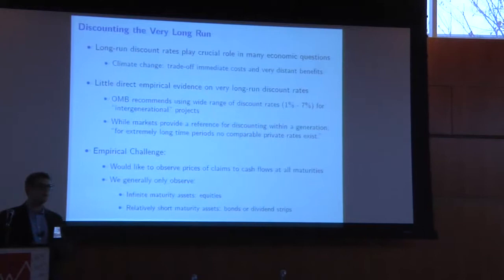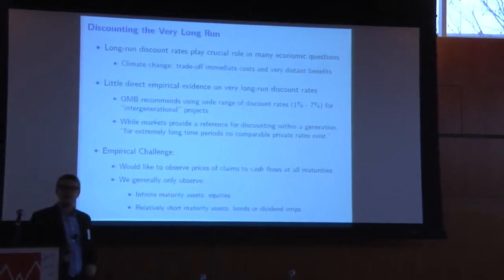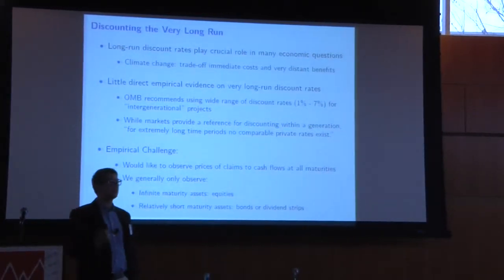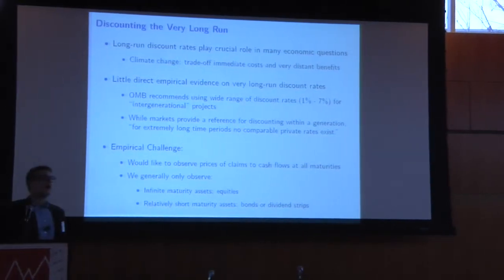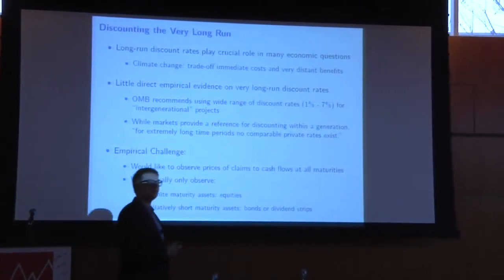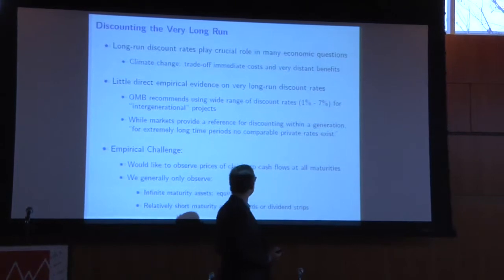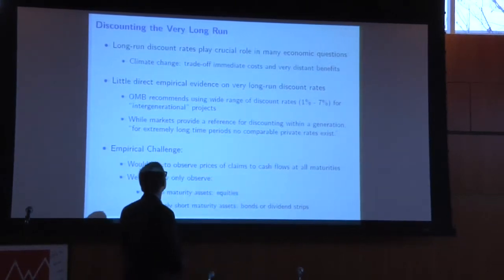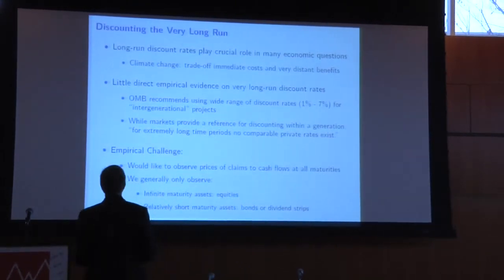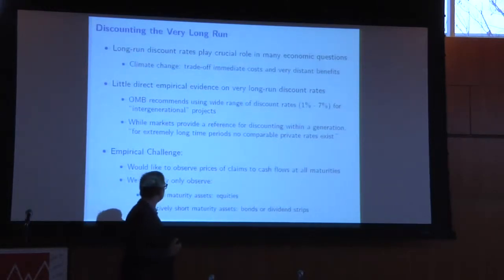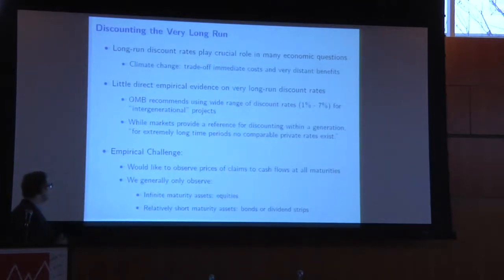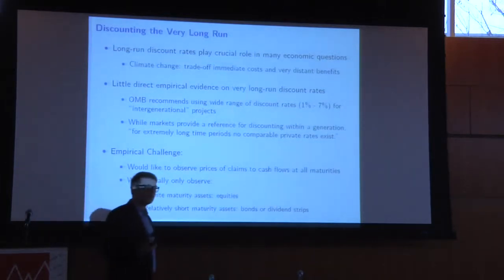The problem with choosing that discount rate is that there is very little direct empirical evidence on what you should choose. As a result, the OMB, when they make suggestions to federal agencies on what discount rates to use, gives a wide range — anywhere between 1% and 7% for what they call intergenerational projects. They lament that while markets provide a reference point for discounting within a generation, for extremely long periods no comparable private rates exist.